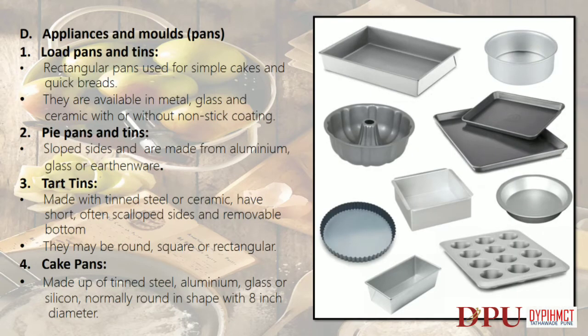Appliances and molds/pans. Loaf pans and tins: rectangular pans used for simple cakes and quick breads; available in metal, glass and ceramic with or without non-stick coating. Pie pans and tins: sloped sides, made from aluminium, glass or earthenware. Tart tins: made with tinned steel or ceramic, have short often scalloped sides and a removable bottom; they may be round, square or rectangular.